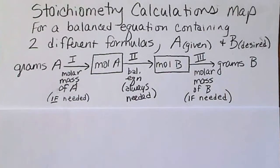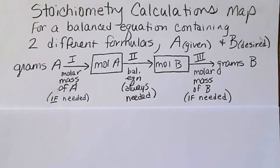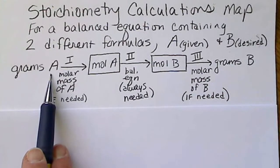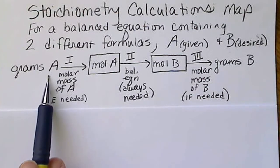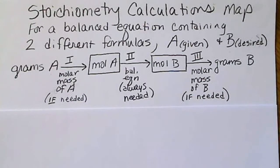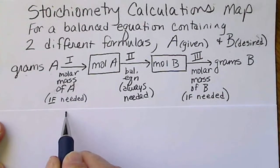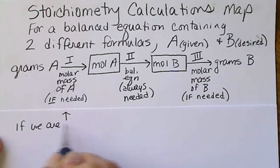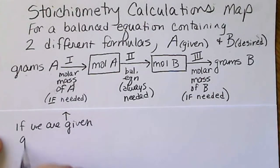Often this step is the second step in a three-step calculation. So on this calculation map, we're going to see where we start and where we stop. If we're given grams of a formula, the only thing we can do if we have grams is use the molar mass and convert to moles. So step one will be grams of A to moles of A, and I've written here if needed.